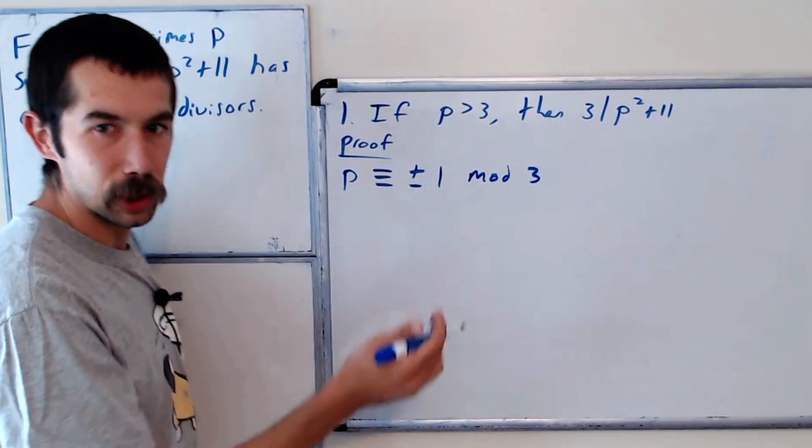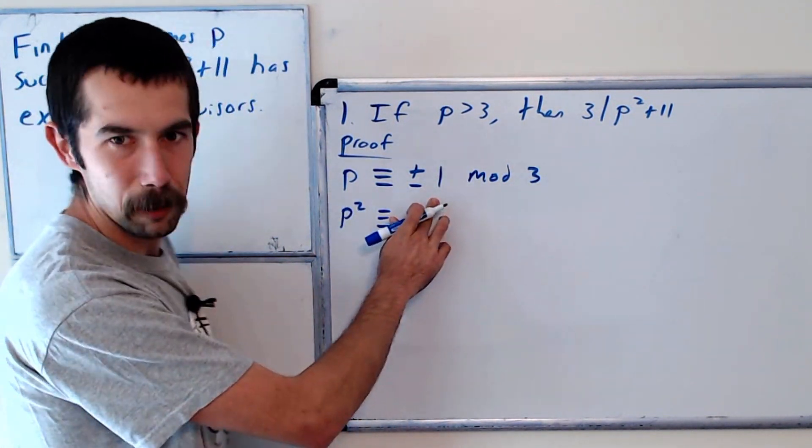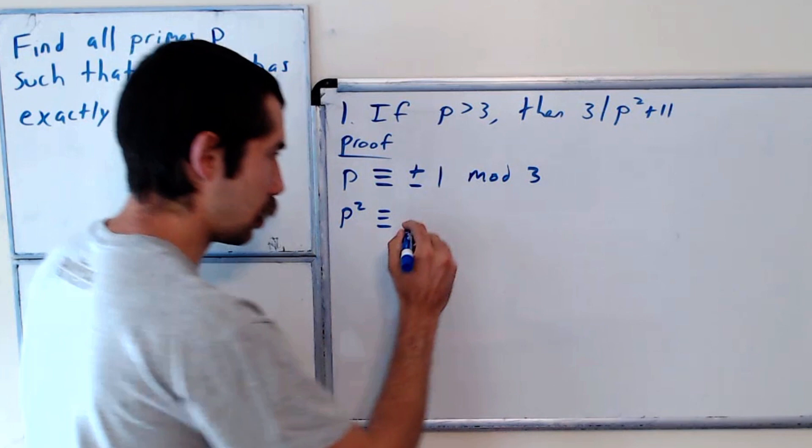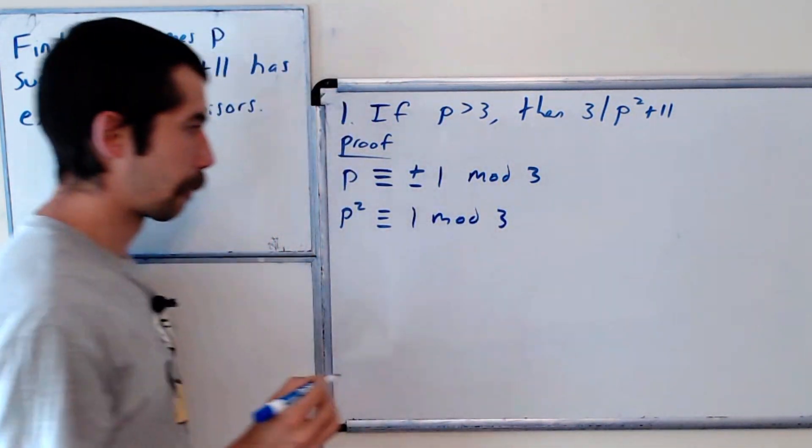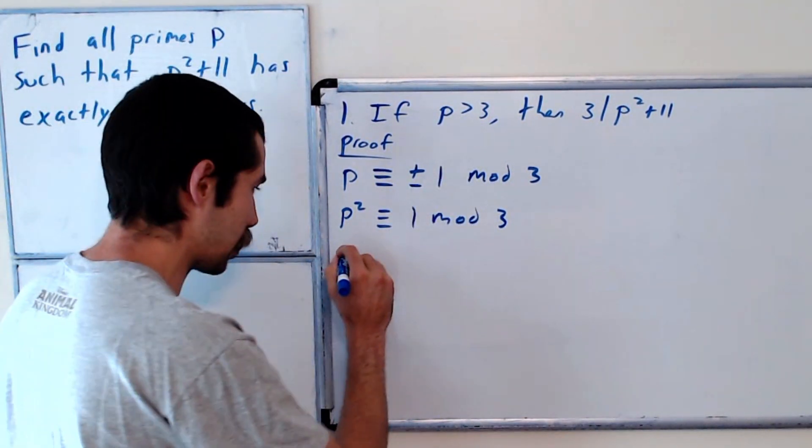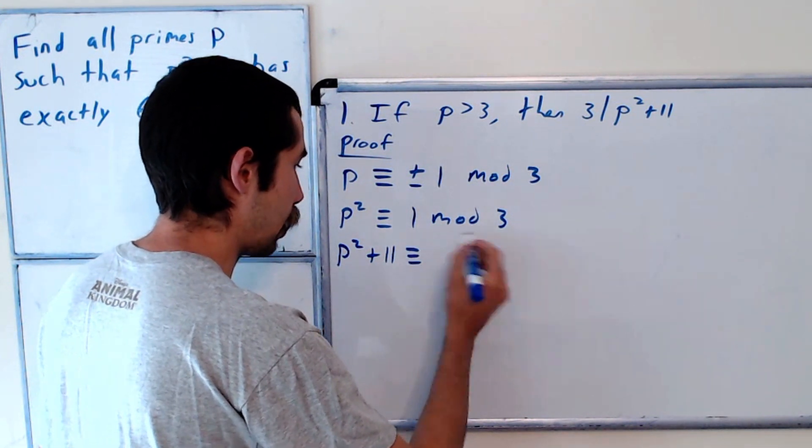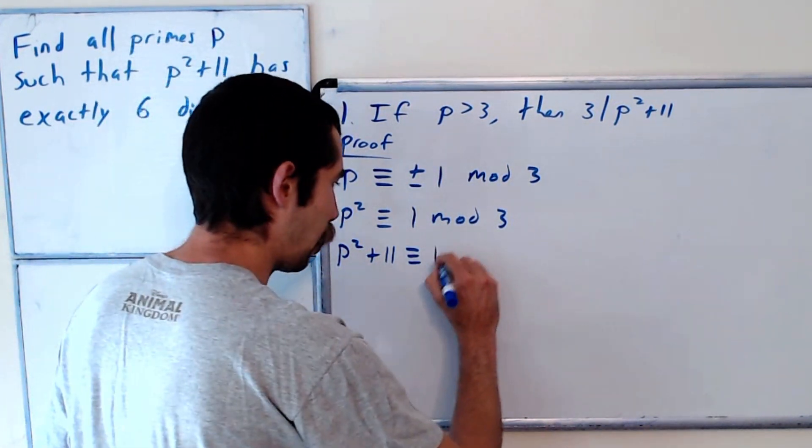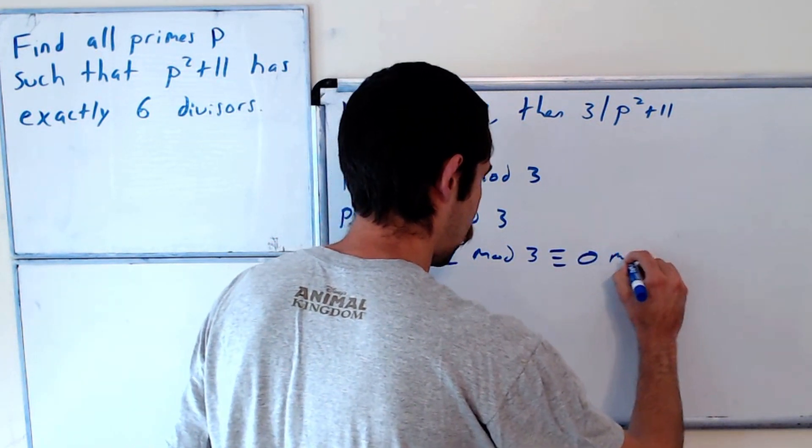Okay, and now squaring it, p squared is going to be, well, if you square 1 or negative 1, you get 1. Okay, so p squared is 1 mod 3. So p squared plus 11 is equal to 12 mod 3, which is the same thing as 0 mod 3.